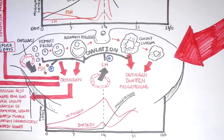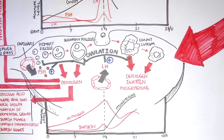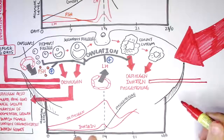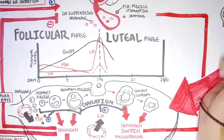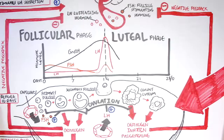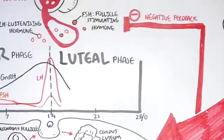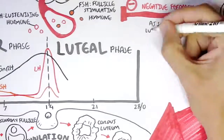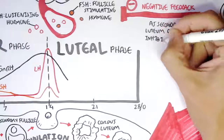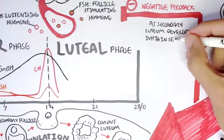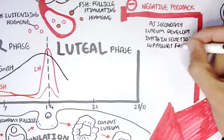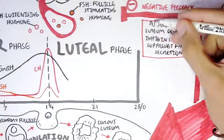So what do these hormones do? Inhibin has a negative feedback and will inhibit the secretion of FSH. Because we are in the luteal phase, we don't need any more follicles to mature just yet. As the corpus luteum develops, inhibin secretion will suppress FSH release to prevent follicle maturation.